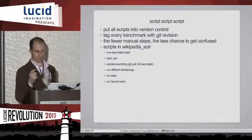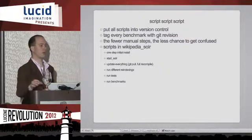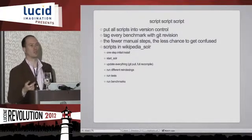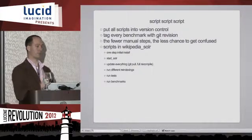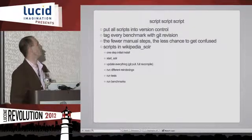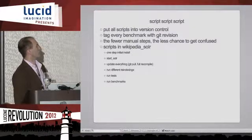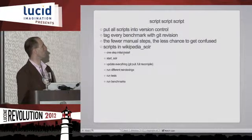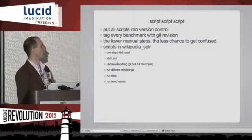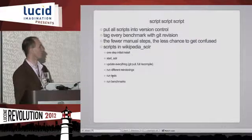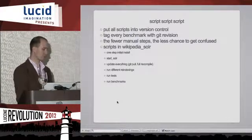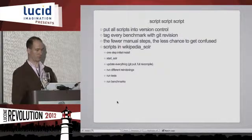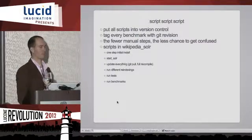That's more useful for dealing with how you index stuff — for example, looking at the performance of different stemmer types. And especially for data cleaning, which I had to do a lot of on this project. Fewer manual steps means less chance of error. Here are the scripts included in the project: one-step initial install, start Solr, update everything, run different re-indexings, run tests, run benchmarks. Fairly standard stuff, but it gets more difficult when you're dealing with separate processes — figuring out how to start up Solr and kill it — and it was worth the effort.